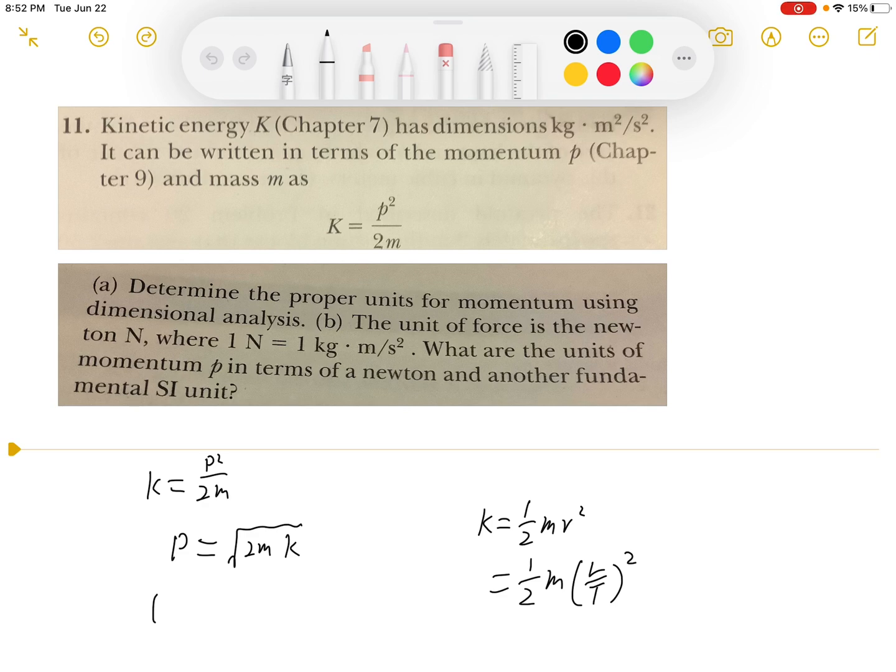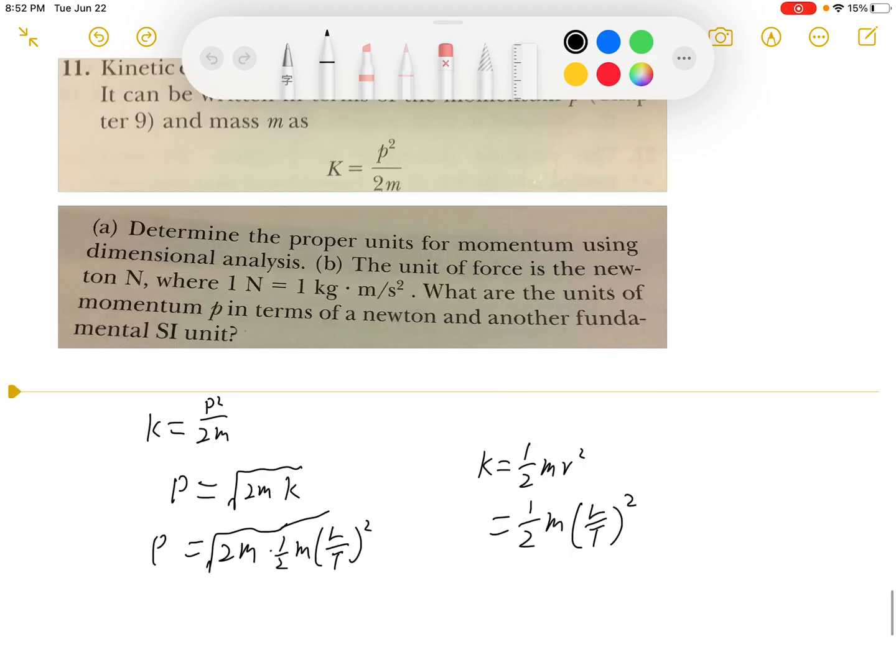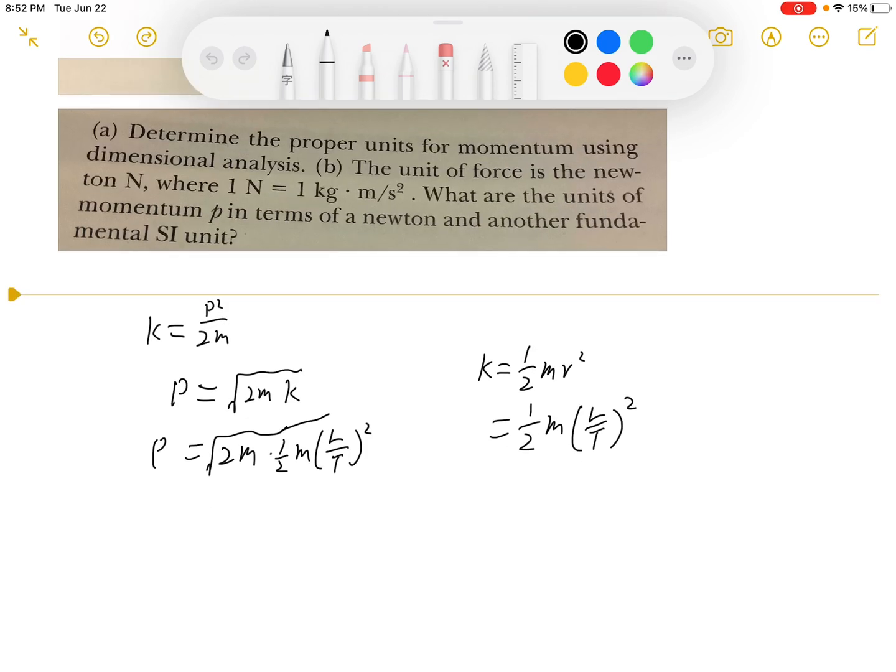We will have P equals square root of 2m times one half m L over T squared. After simplifying this, we will have P equals m squared times L over T squared.